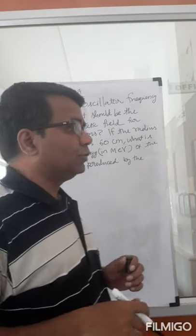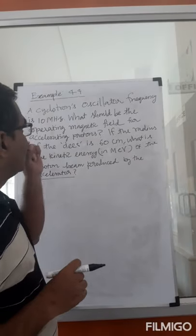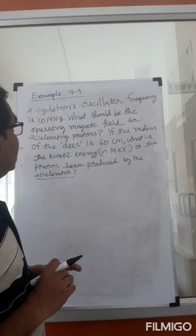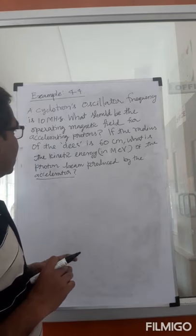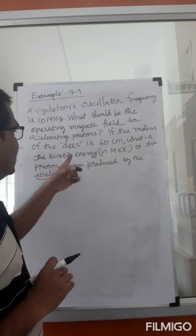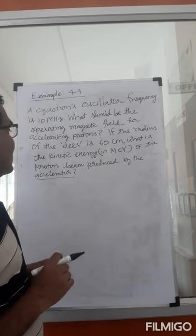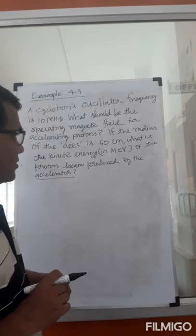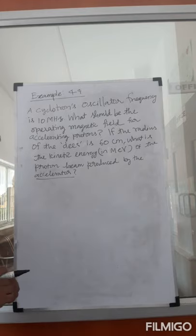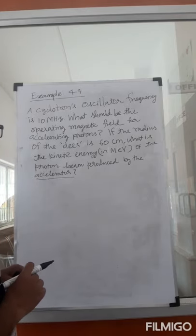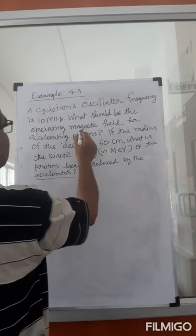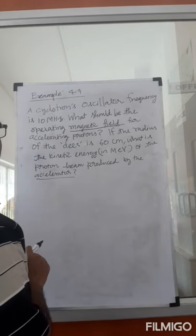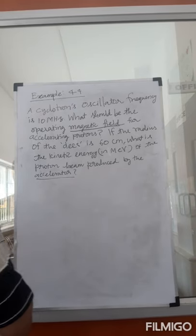Let's do example problem 4.4. A cyclotron's oscillatory frequency is 10 megahertz. What should be the operating magnetic field for accelerating protons? If the radius of the D is 60 centimeters, what is the kinetic energy in mega electron volts of the proton beam produced by the accelerator? They are asking for the magnetic field and the kinetic energy.